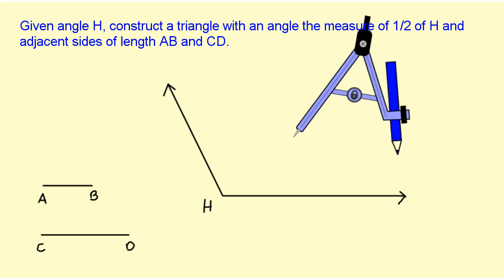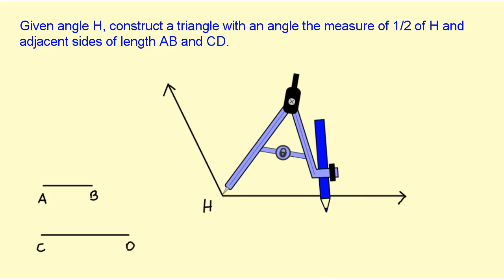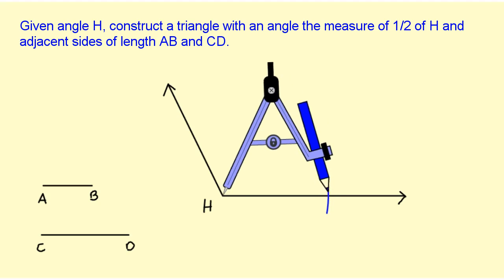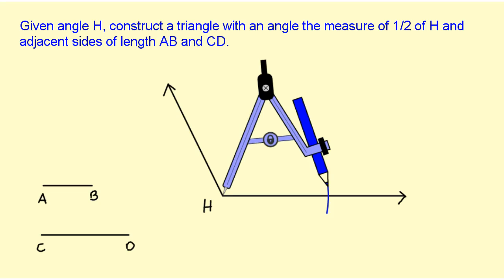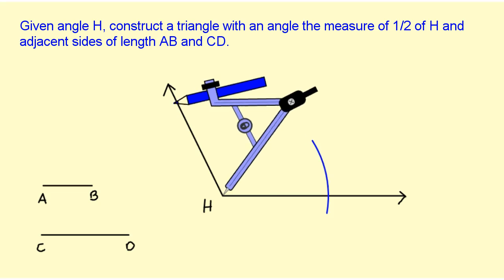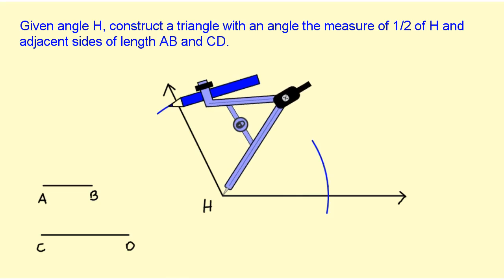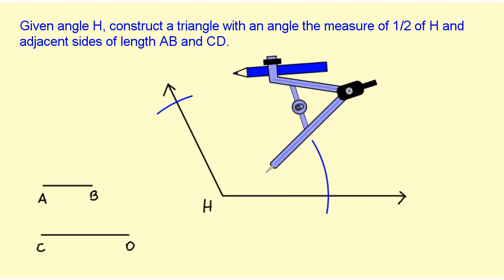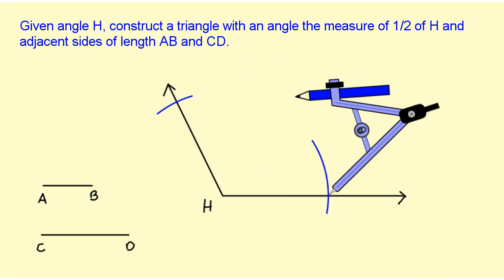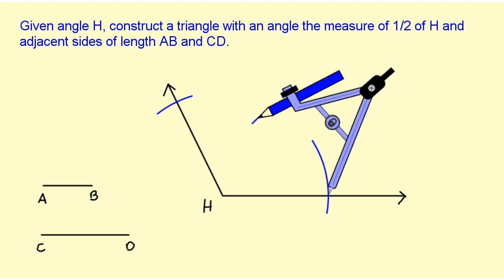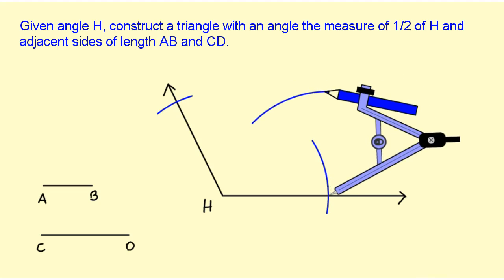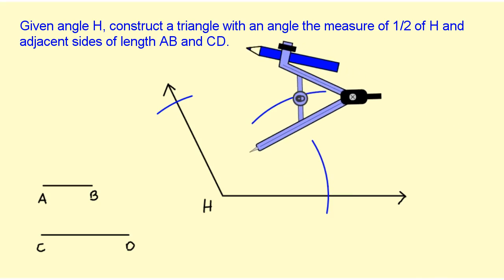So now I'm going to take my compass, put the point on the vertex H, mark off an arc on one ray, and mark off an arc on the other ray. Then I'm going to pick up my compass, put it at the point of intersection, and draw an arc in the interior from both points of intersection.